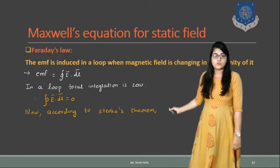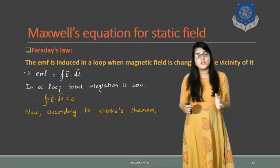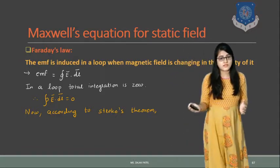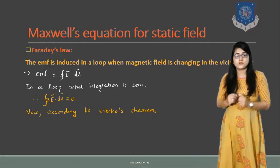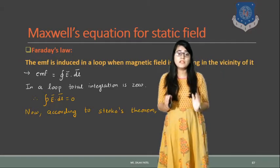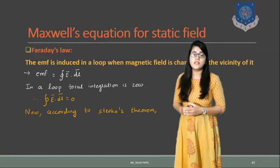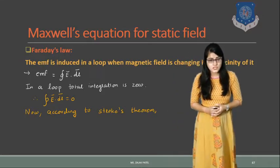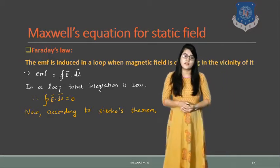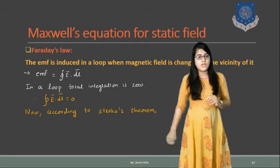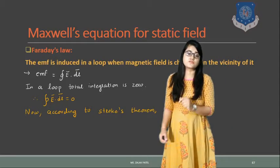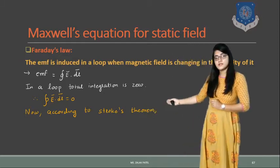According to Stokes' theorem, we know that whenever we need to make a relationship between volume integration and surface integration, we follow the Divergence theorem. When we want to make a relation between line integration and surface integration, we use Stokes' theorem. Here the equation is in line integration form, so to relate line and surface, we follow Stokes' theorem.